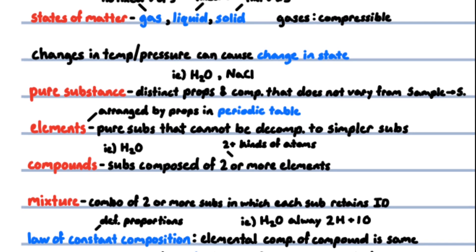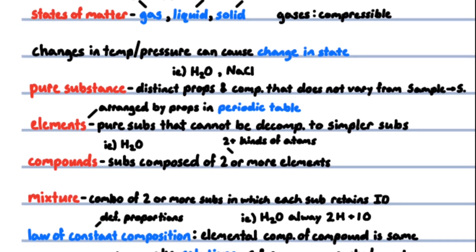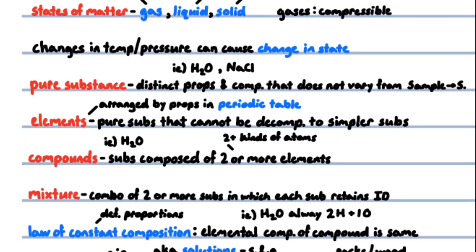Changes in temperature and or pressure can cause a change in state, for example, from solid to liquid by raising temperature. A pure substance has distinct properties and a composition that does not vary from sample to sample, for example, water and table salt are pure substances.